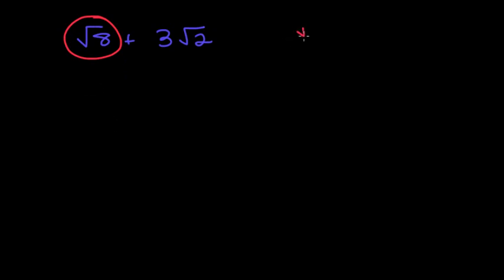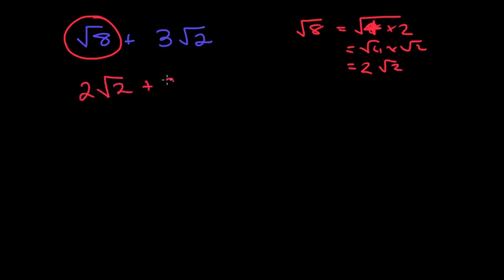We know that root 8 is the same as doing root 4 times root 2, which is the same as saying 2 root 2. So we've actually got 2 root 2 plus 3 root 2, which is equal to 5 lots of root 2.